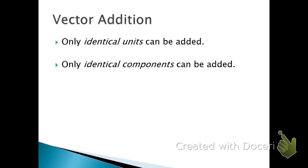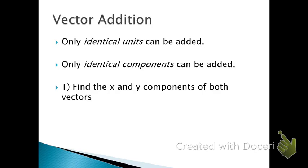So, step one, find the x and y components of both vectors. So, take your first vector, break it into its x and y components using its magnitude and angle. Take the next vector, break it into its x and y components using its magnitude and angle. Do this individually.